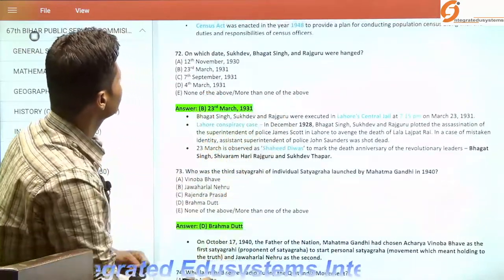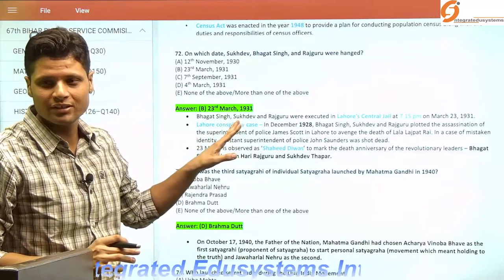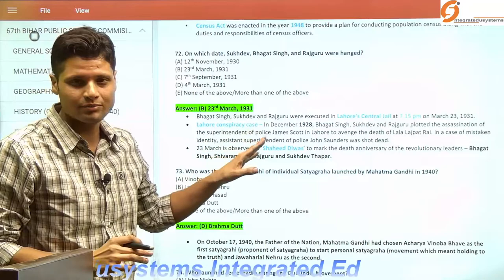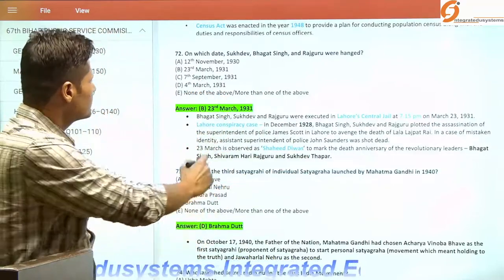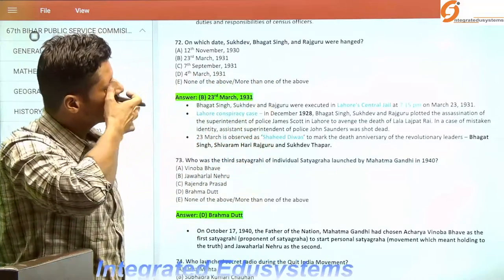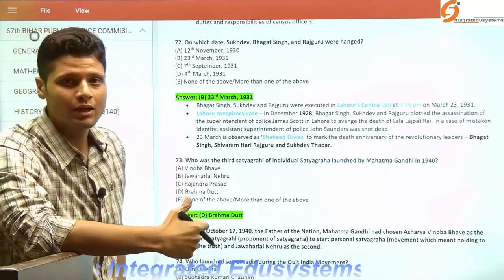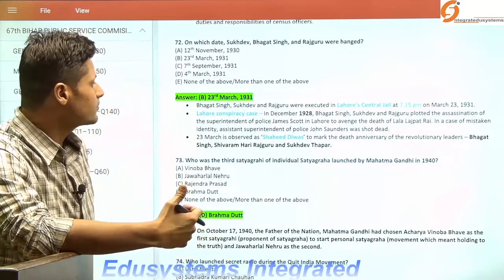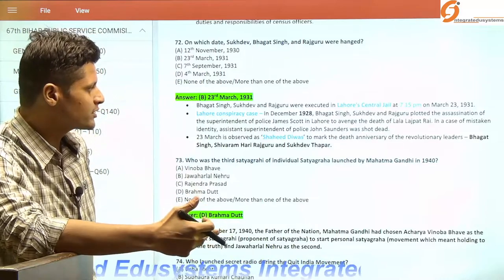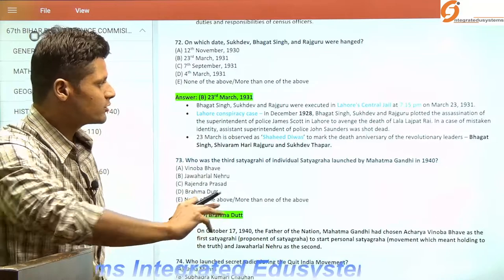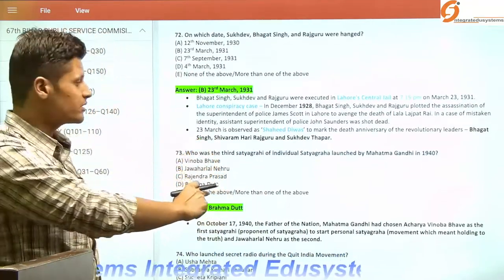On which date were Sukhdev, Bhagat Singh, and Rajguru hanged? It was 23rd March 1931 — a date very close to our hearts. These three revolutionaries were tried under the Lahore Conspiracy Case. They had wanted to take revenge for the death of Lala Lajpat Rai and targeted Superintendent of Police James Scott, but mistakenly shot John Saunders. We observe 23rd March as Shahid Divas.